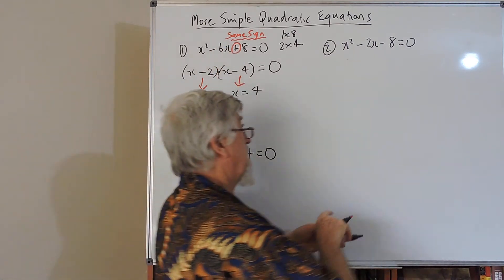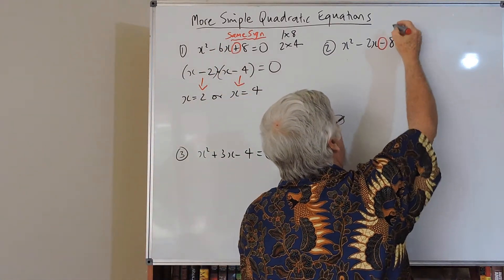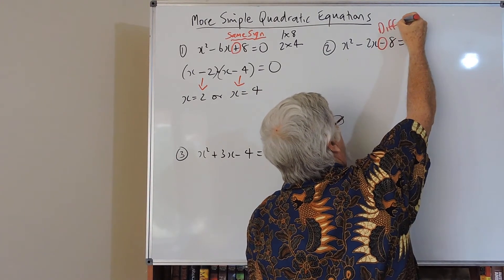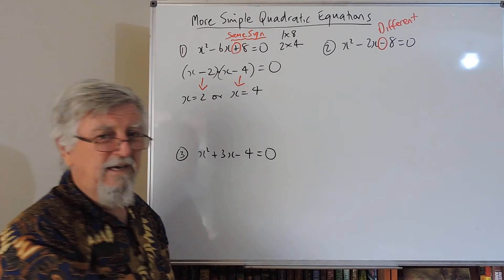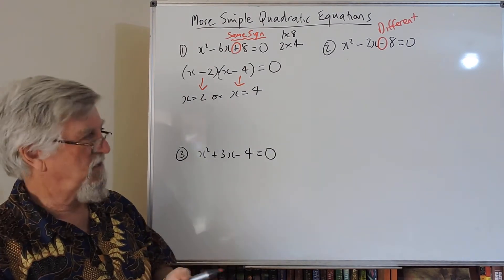Go to this one here. The big difference is this here. This tells us they have to be different. How can I get two numbers and multiply to a negative 8? One has to be negative, one has to be positive.